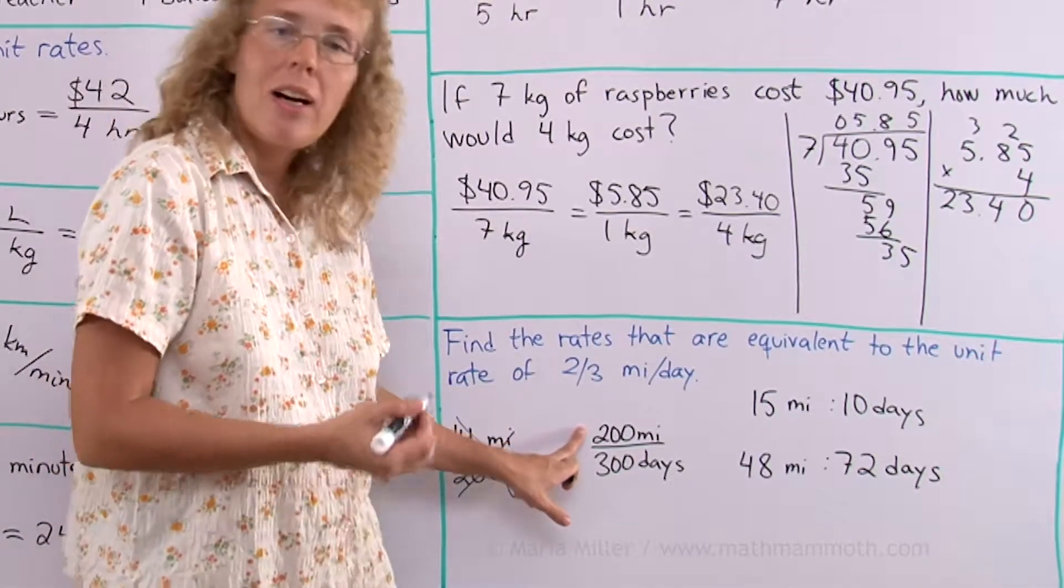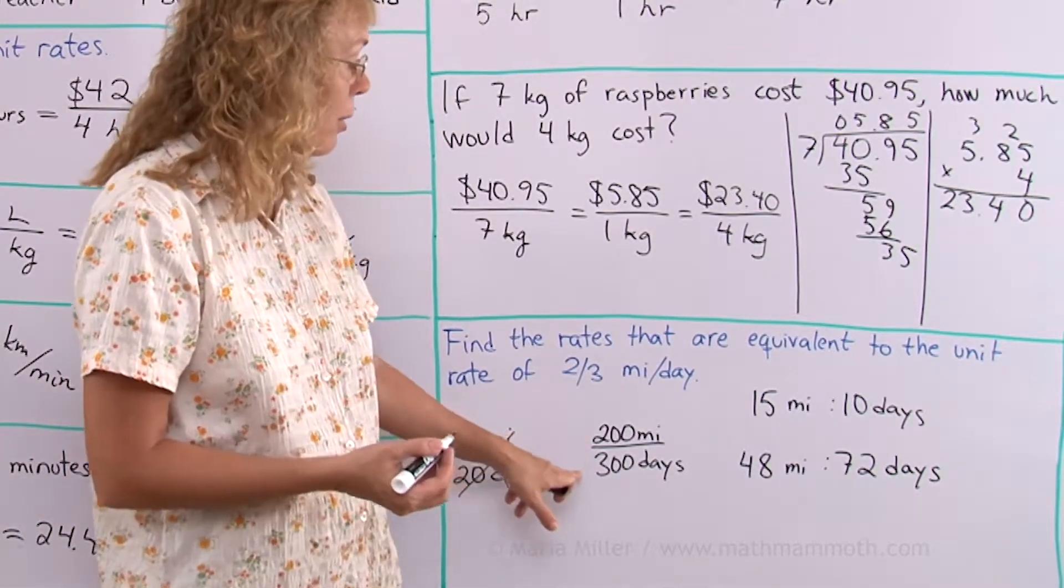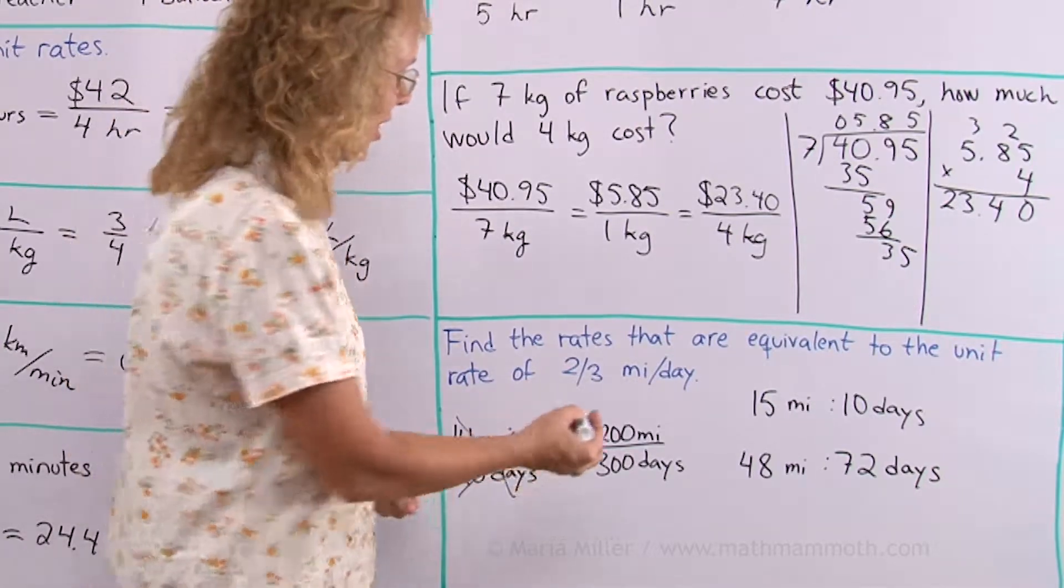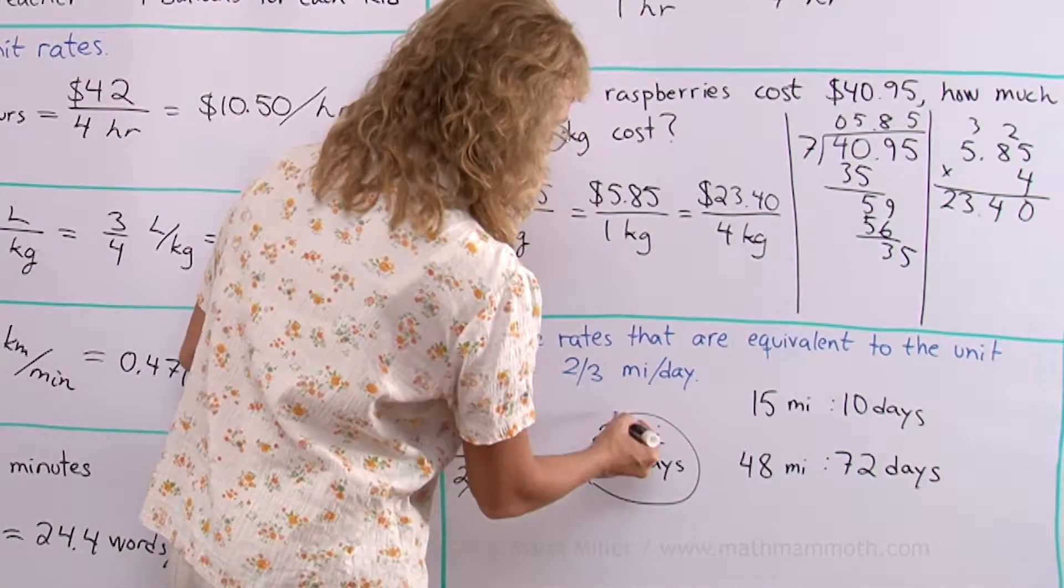Here, both are divisible by 100. And if I simplify this, I definitely will get 2 thirds. It is very easy to see. This is equivalent to that.